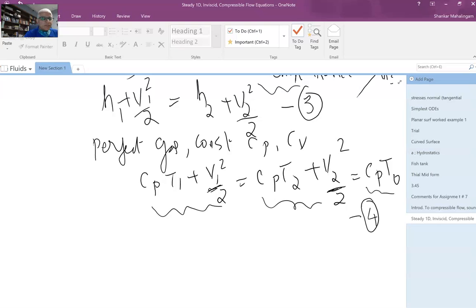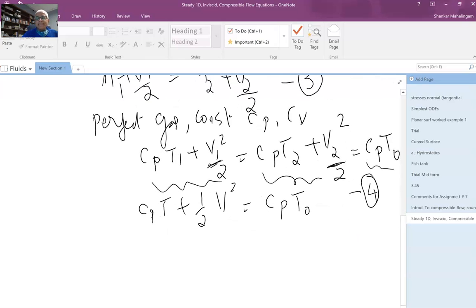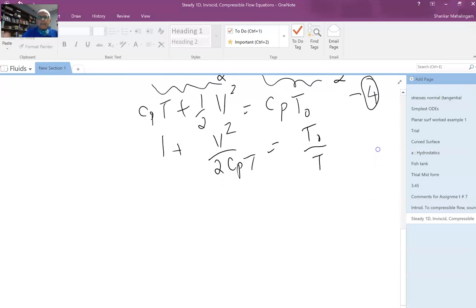What we can do is rewrite the equation as Cp*T + v^2/2 anywhere in the flow equals Cp*T0, where T0 is the stagnation temperature. Whether the flow actually stagnates or not is not relevant—at every point you can define a stagnation temperature. Now I can divide both sides by Cp*T, in which case I have 1 + v^2/(2*Cp*T) = T0/T. We're talking about an ideal gas, so I can replace Cp as gamma*R/(gamma-1), ideal gas with constant specific heat.